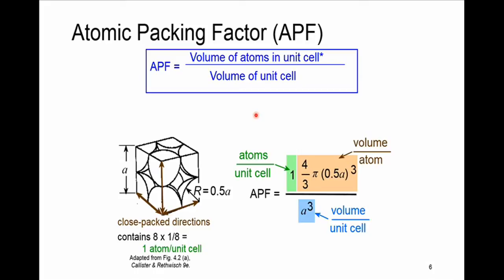The atomic packing factor is the volume of atoms in each unit cell divided by the volume of the unit cell — the volumetric density of atoms. For simple cubic structure, we need the number of atoms. Each atom at the corner of the unit cell contributes 1/8 of a sphere. We have 8 corners, giving 8 × 1/8 = 1 atom per unit cell.